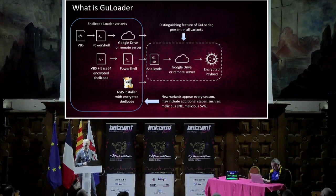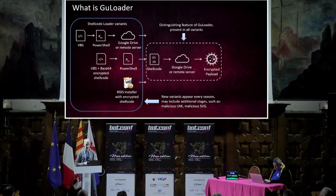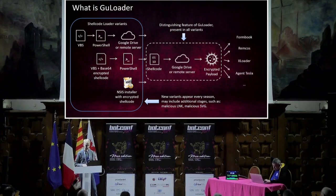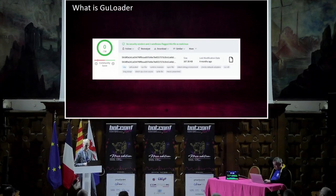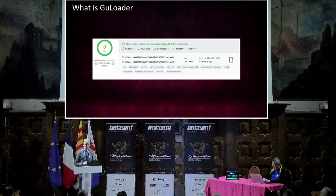This is likely why Google cannot do anything with it, as identifying such encrypted payloads is practically impossible because they don't contain any PE headers. The shellcode can be delivered encrypted either within a VBS script, embedded within an NSIS installer package, or stored on a remote server and downloaded via a PowerShell script. Additionally, this year we observed a delivery variant using a malicious SVG file.